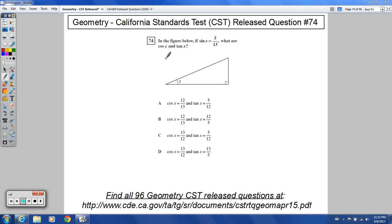Welcome to release question number 74 for the Geometry CST release questions. It says in the figure below, if sine of x equals 5 over 13, what are the cosine of x and tangent of x?